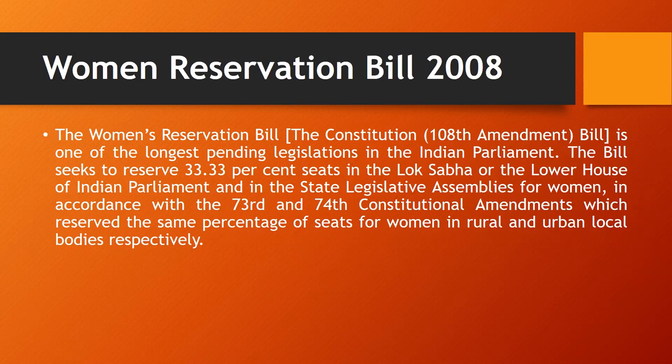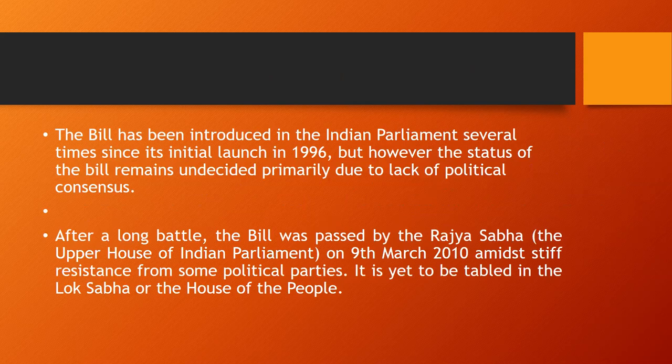The Women Reservation Bill introduced before Parliament seeks to reserve one-third — that is 33.33 percent — of seats in the Lok Sabha, the lower house of the Indian Parliament, and in state legislative assemblies for women, as per the same percentage in rural and urban local bodies under the 73rd and 74th Amendments. The bill was initially launched in 1996, and after a long battle, the Rajya Sabha passed this bill on 9th March 2010.